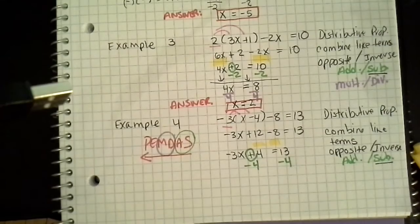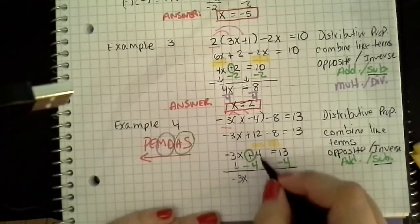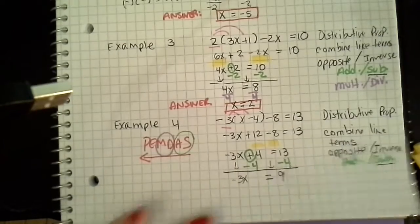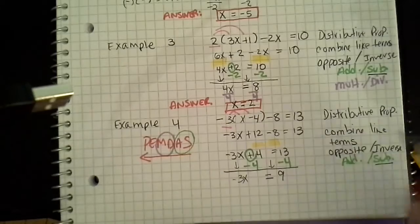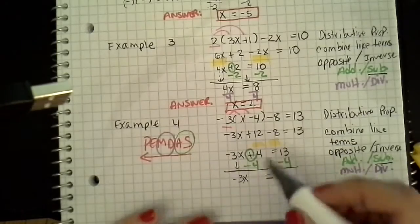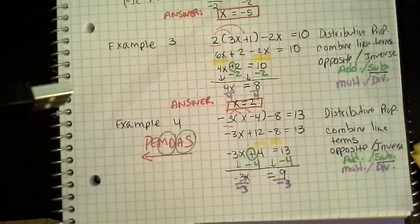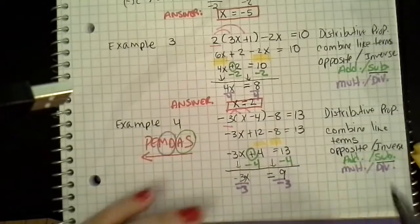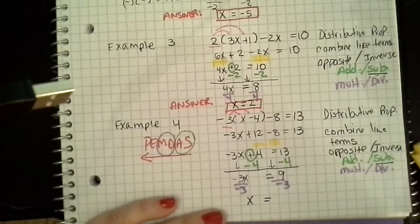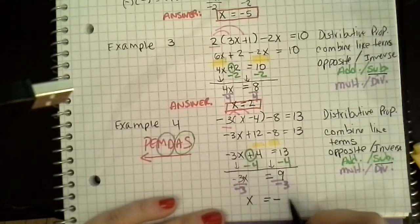So that gives me — bringing this down to negative 3x. That's a 0, I don't have to rewrite that. So I'm going to put equals. 13 minus 4 is 9. And follow with finding the inverse of multiplication. And this is multiplication, so the inverse of multiplication is division. So we're going to divide by negative 3. And when I divide by negative 3, I get x equals — negative 3 divided by negative 3 is 1, I don't have to put the 1 in front of the x. 9 divided by negative 3 is a negative 3.